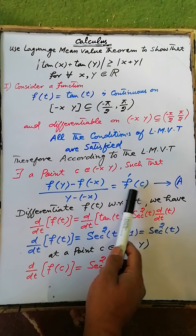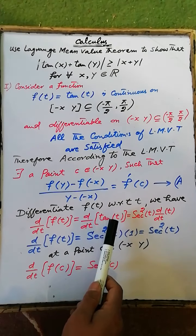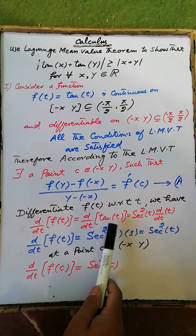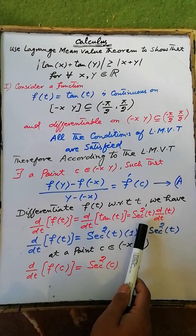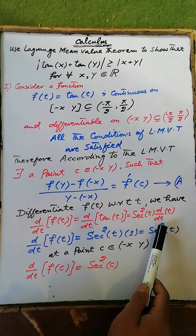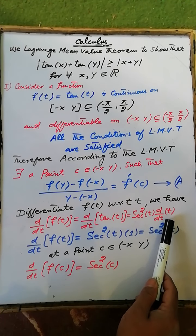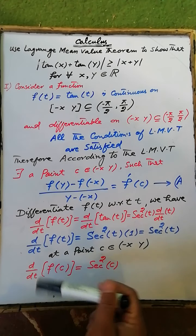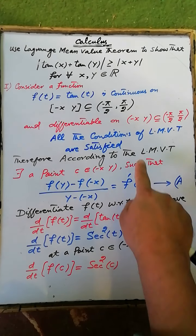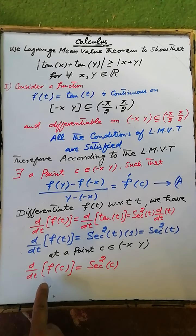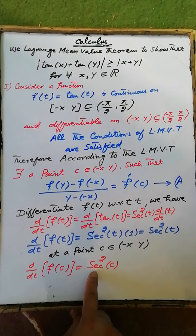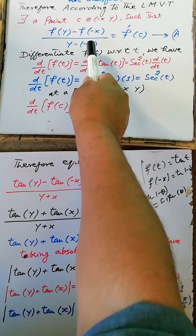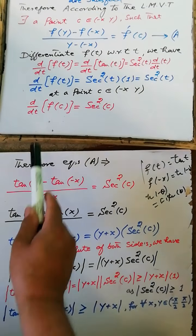Now to calculate f'(c), differentiate f(t) with respect to t. We have d/dt of f(t) = d/dt of tan(t). The derivative of tan(t) is sec²(t) multiplied by the derivative of t with respect to t, which equals 1. The result is sec²(t). At a point c in the open interval with endpoints -x and y, the derivative of the function at point c is equal to sec²(c).